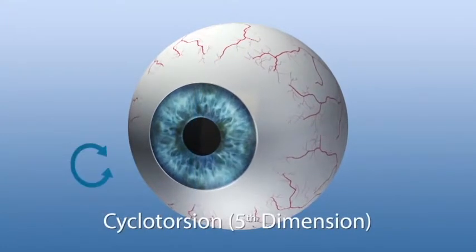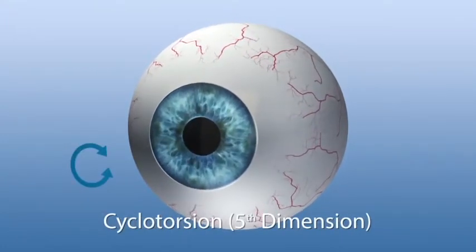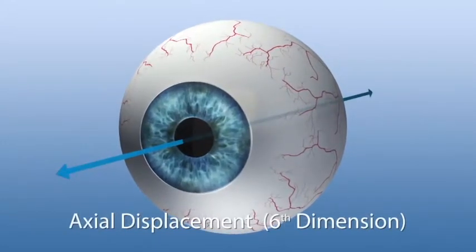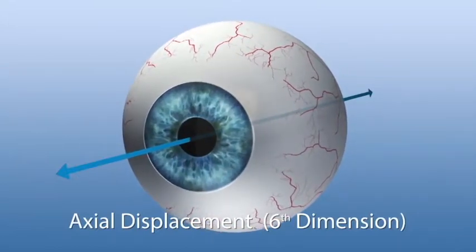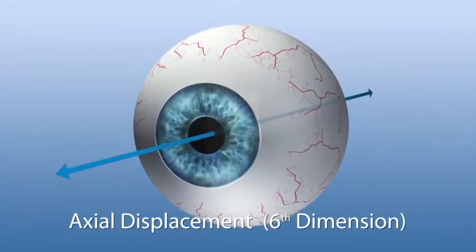The fifth dimension describes the eye's rotations around the visual axis, the cyclotorsion of the eye. The sixth dimension describes eye movements along the z-axis caused by upward or downward movements of the head or the eye.